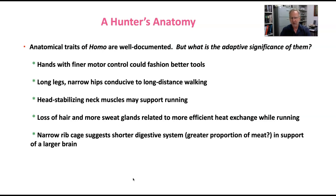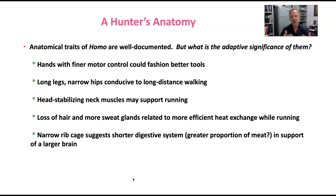Our narrow rib cage suggests a shorter digestive system that is more indicative of a diet with more meat. If we were becoming more meat eaters because we were able to access meat through hunting using our tools, that would support a larger brain, because we would then have access to more calories — and our brain demands a lot of calories. Our ability to hunt and make tools would result in a shorter digestive system to accommodate digesting meat, and having a shorter digestive system would energetically favor a bigger, larger brain.